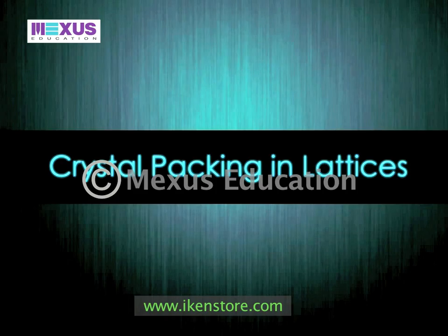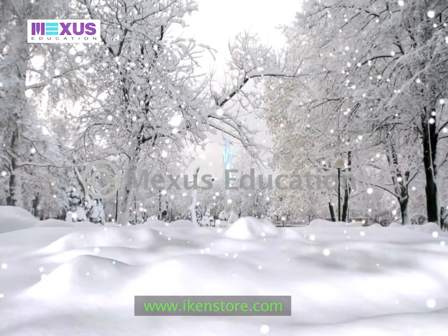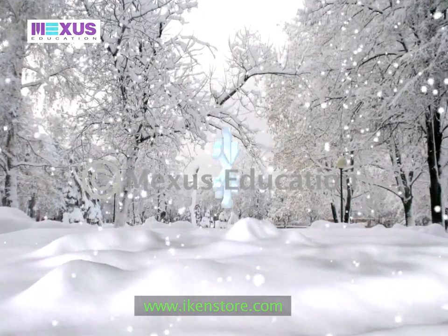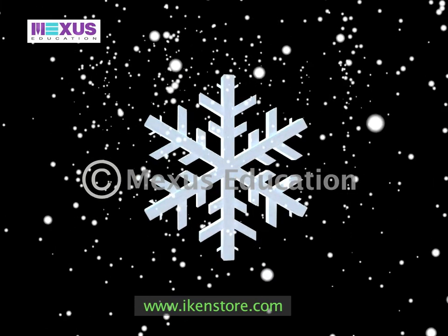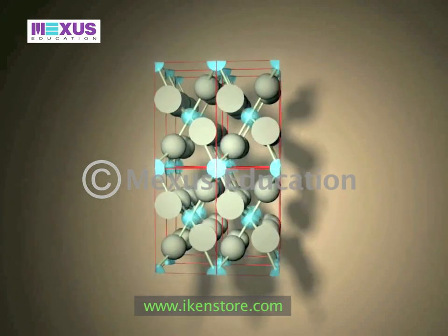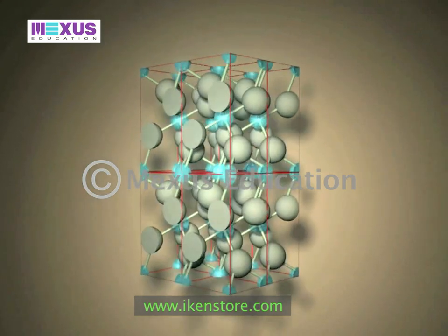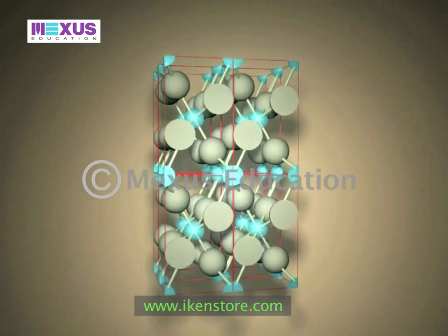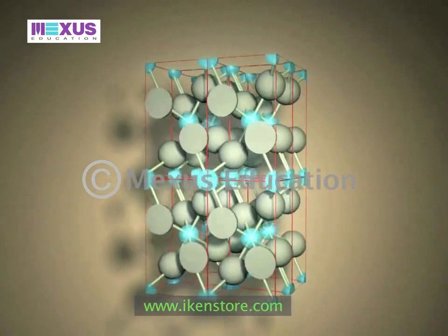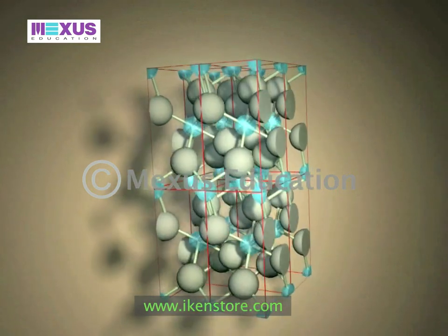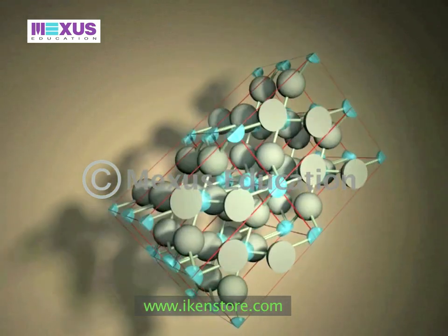Crystal packing in lattices: crystal structure refers to the unique arrangement of atoms or molecules in a crystalline liquid or solid. A crystal structure is three-dimensional in shape. The arrangement of atoms in a crystal is repeated at each lattice point — the crystal looks the same when viewed from any one of the lattice points. These points form identical tiny boxes referred to as unit cells.